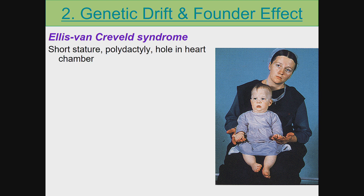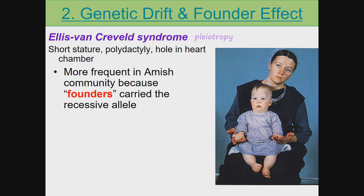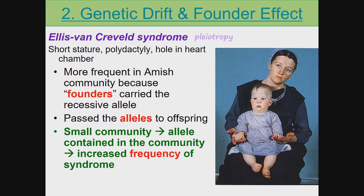Ellis Van Krevel syndrome causes short stature, polydactyly, and a hole in the heart chamber. As a throwback to earlier in this unit — since one gene causes many traits, this is called pleiotropy. This syndrome is more frequent in the Amish community because the founders carried the recessive allele. They passed it to their offspring, and because they live in a small, contained community, there is an increased frequency of the syndrome among the Amish people.